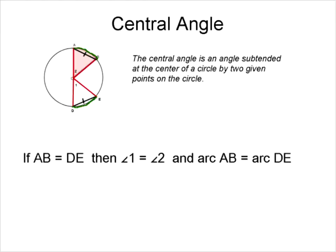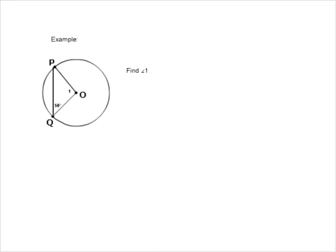An arc can either be written as 'arc' like that, or we sometimes have arcs with curved symbols over top to indicate they're arcs on circles. That's called the central angle, and you just want to think about it as coming from the center of a circle.